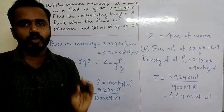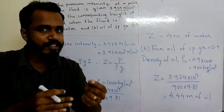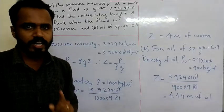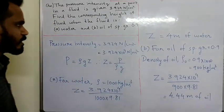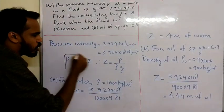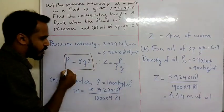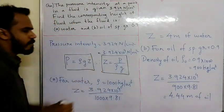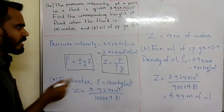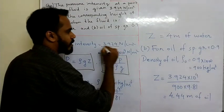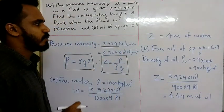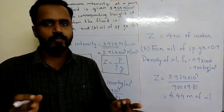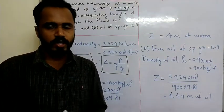To find the height, we rearrange P = rho × G × Z to get Z = P / (rho × G). The pressure intensity is 3.924 N/cm², which we convert to N/m² by multiplying by 10⁴, giving 39,240 N/m².